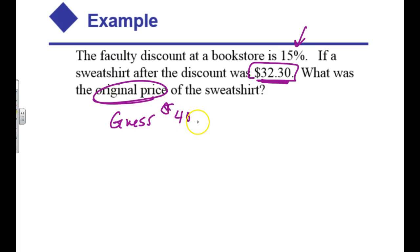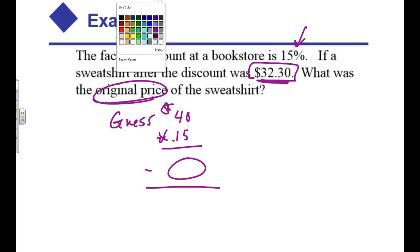And then take 15% and then subtract that off and just see. But the guessing and checking is just going to take way too long. So the book's approach on this, I think, is a little bit different than my approach.